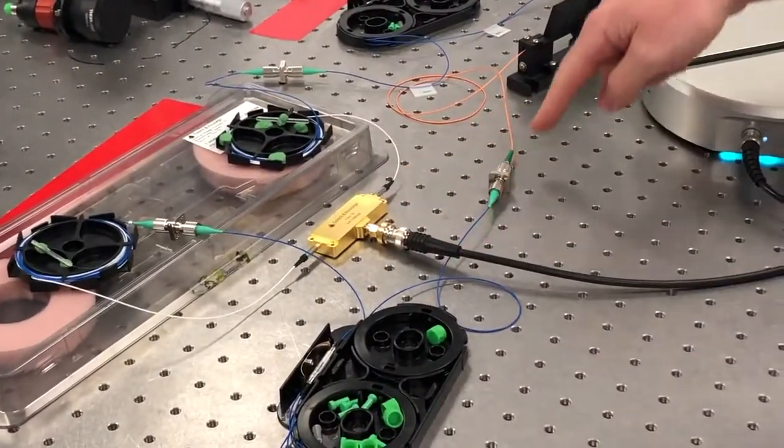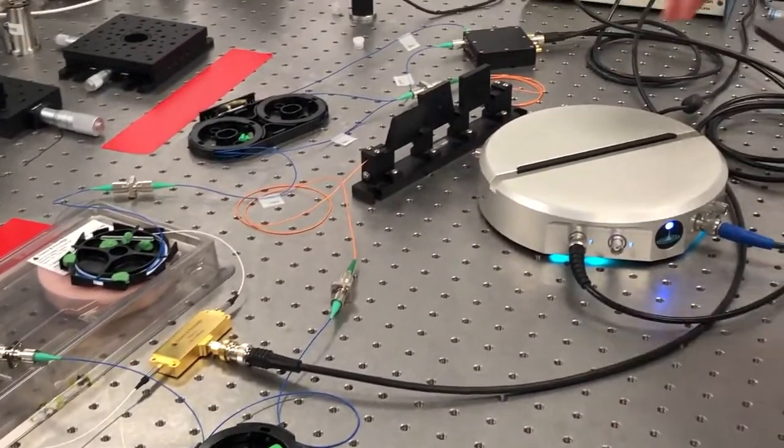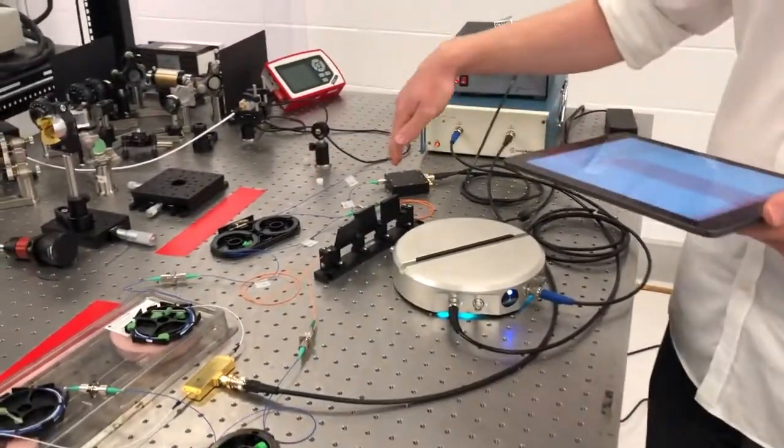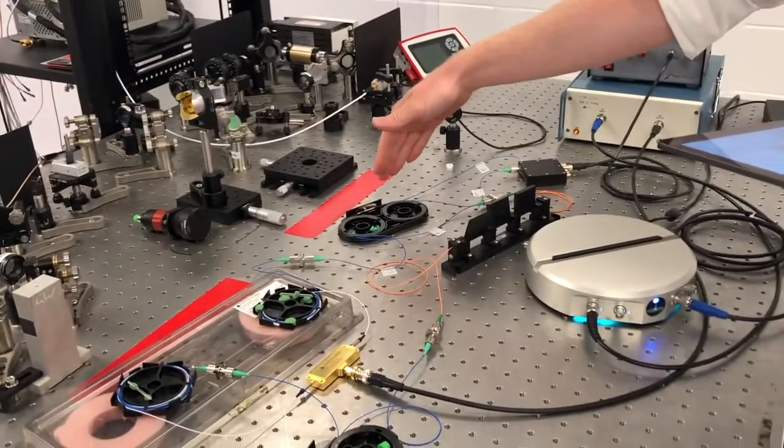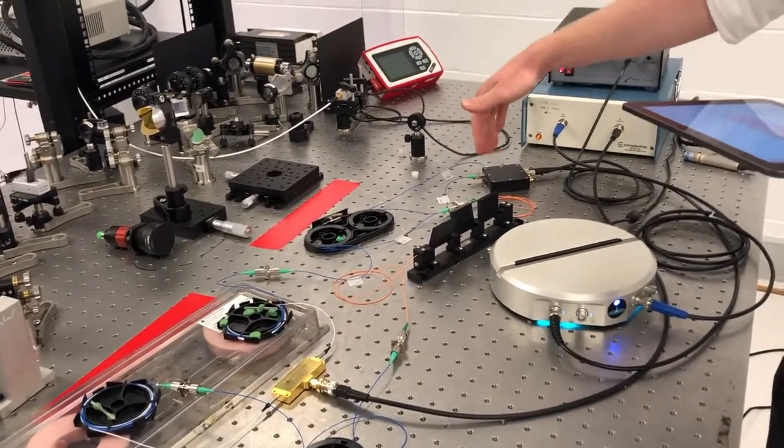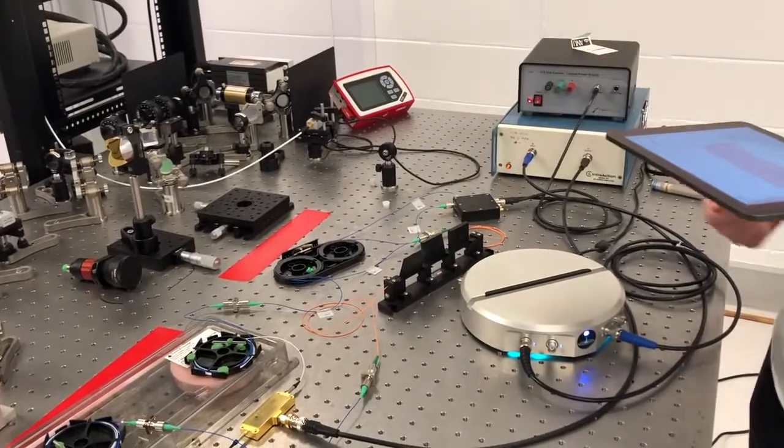The other one just goes through a polarization controller, and then those two arms are recombined at another 50-50 fiber coupler, at which point they interfere in a balanced photodetector.